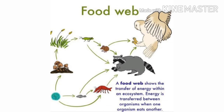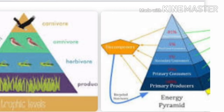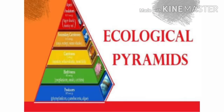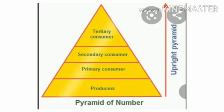We can also show food relationships and energy transfer in an ecosystem using triangle-shaped diagrams called ecological pyramids. An ecological pyramid is a graphic representation of an ecological parameter — such as the number of individuals, biomass, or energy — present at various trophic levels.